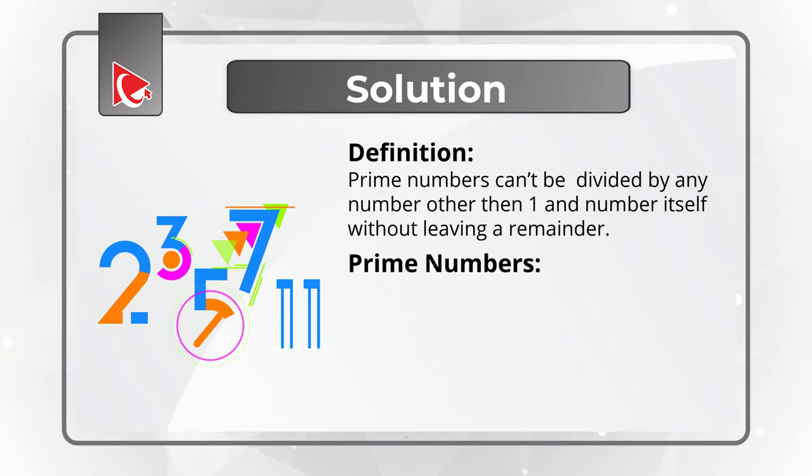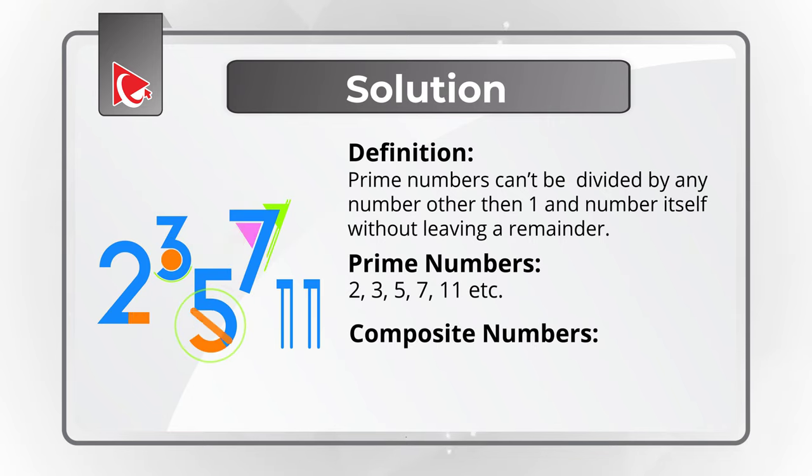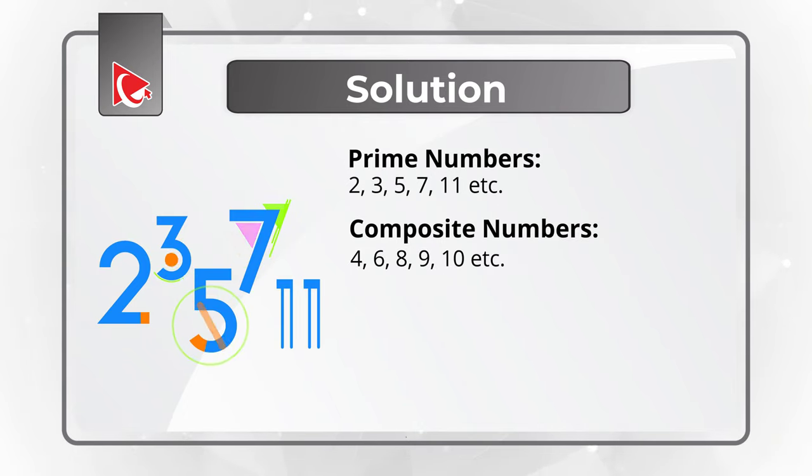Some examples of prime numbers would be 2, 3, 5, 7, 11. And you can continue the chain. The opposite of prime numbers are composite numbers. And examples of those would be 4 could be divided by 2, 6 could be divided by 2 and 3, 8, which could be divided by 2 and 4, 9, 10, and you can continue the sequence.